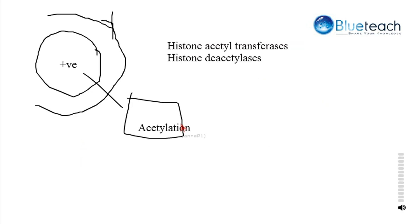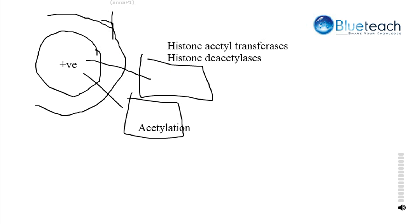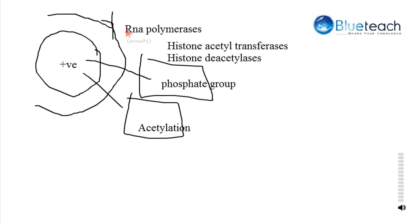The addition of the phosphate group, which is negatively charged, neutralizes the positive charge of histone proteins. As a result the DNA is left loose and is susceptible to the action of RNA polymerases, leading to active transcription of the gene. So the phosphate group specifically phosphorylates the serine 10 residue of the histone H3 protein and also activates certain acetyltransferases.